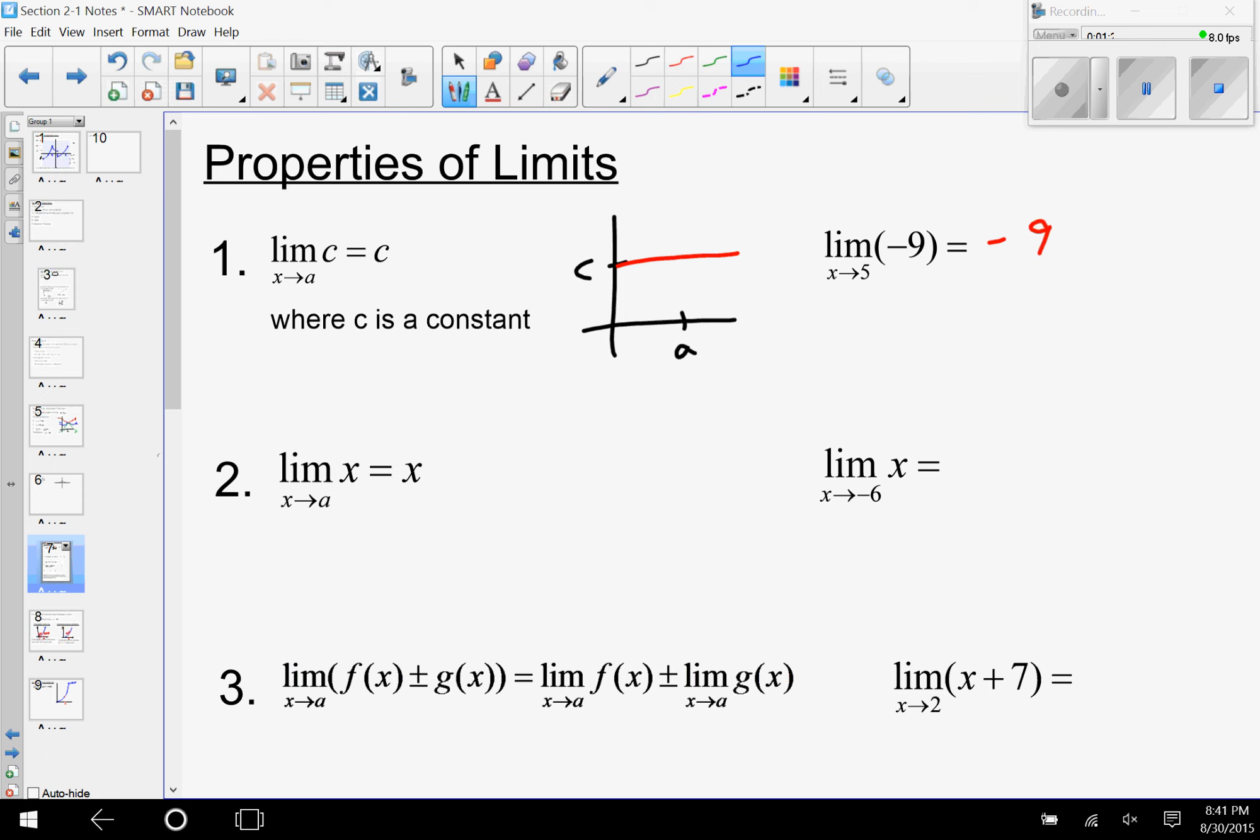Next we have the limit as x approaches a of x. This is really the one property most responsible for substitution. As we know, our y equals x graph goes through the origin and has a slope of one.